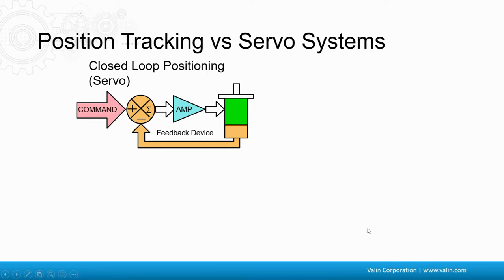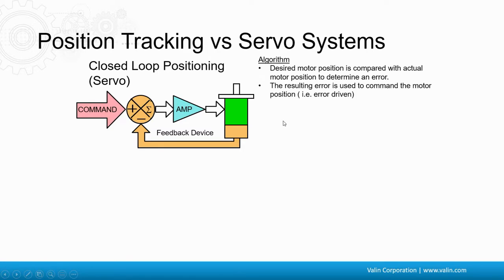A position tracking system is not a servo system. Okay. Let's take another quick look at the closed loop positioning. Okay. This is what we've been talking about where the feedback goes back to a summing junction. And then the error of that goes to the amplifier. That is closed loop. And the main thing here is that the desired motor position is compared with the actual motor position to determine an error. And then that is used to command the motor.